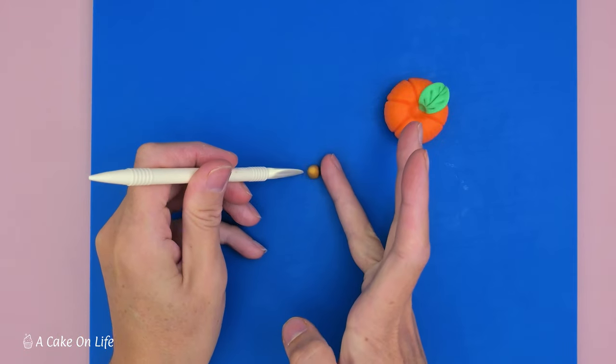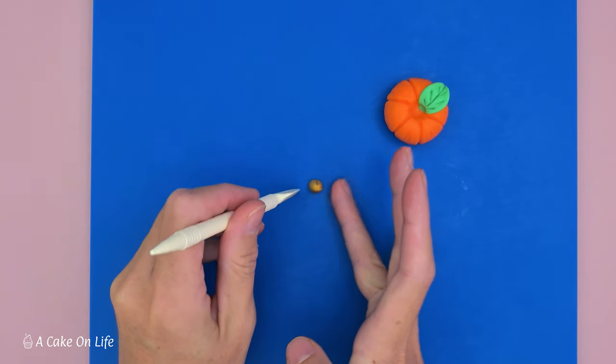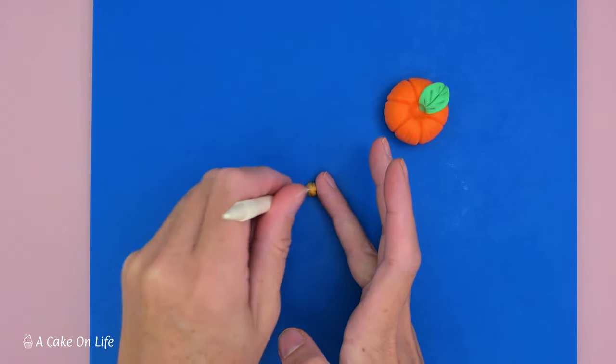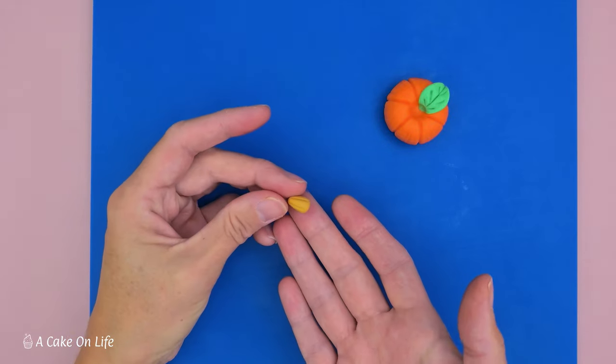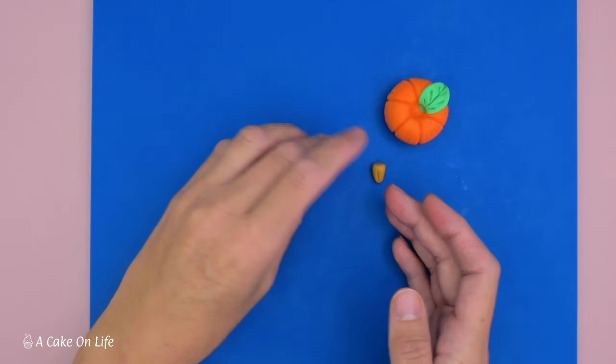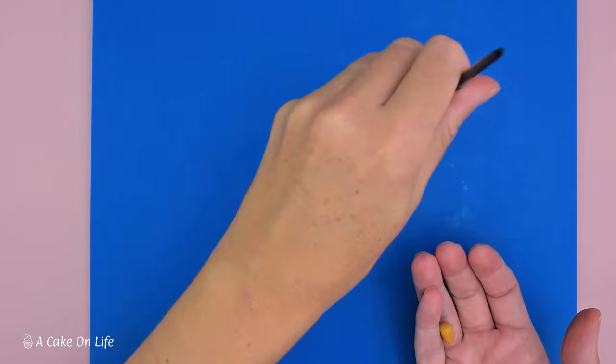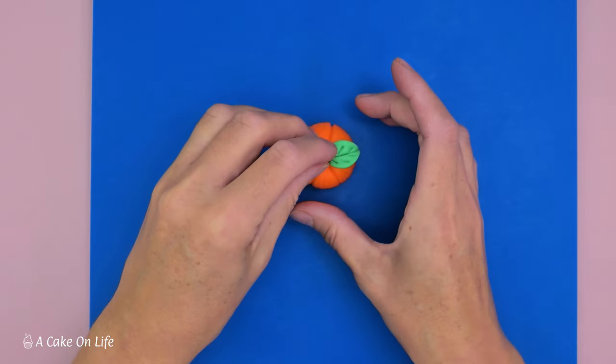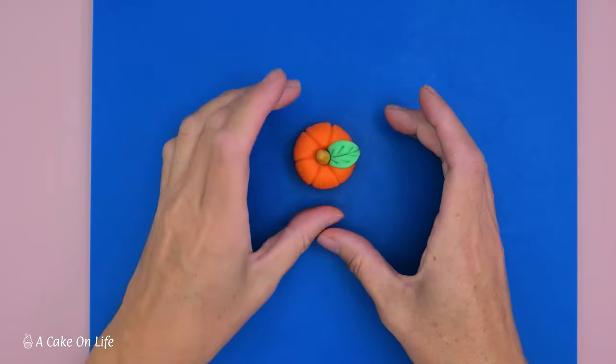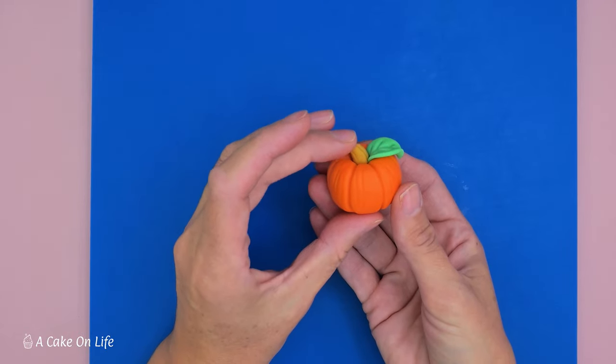And then if you want to you can add a little bit of texture again with the knife tool, just going around, just make a little score of a line up there. There we go, and then we're just going to stick that into position. And there we go, and then you can kind of curve that and tweak that to how you like.